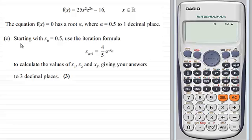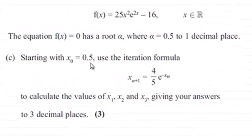Starting with our first approximation x₀ equaling 0.5, use the iteration formula x_{n+1} equals four-fifths e to the power minus x_n to calculate the values of x₁, x₂ and x₃, giving your answers to three decimal places. This is worth three marks.